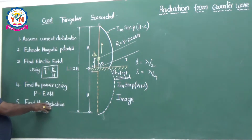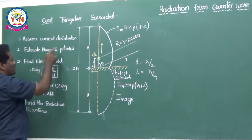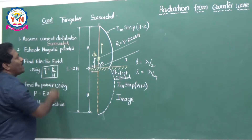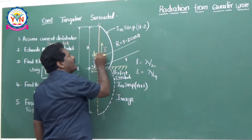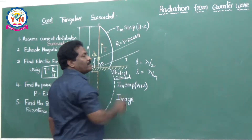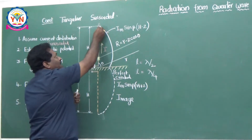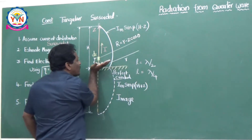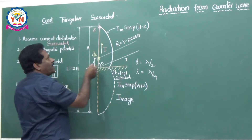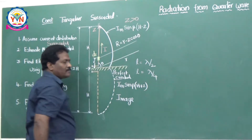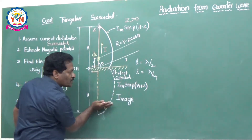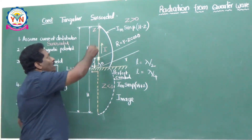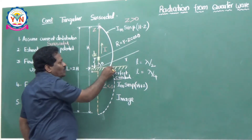If you assume the sinusoidal current distribution, you will get accurate results for the half-wave dipole as well as the quarter wave monopole. The procedure is: first assume the current distribution. Sinusoidal means the current I equals Im·sin·β(h−z) for z greater than 0 — the quarter wave monopole is placed along the z-axis — and I equals Im·sin·β(h+z) for z less than 0. These are the current distributions we are using here.